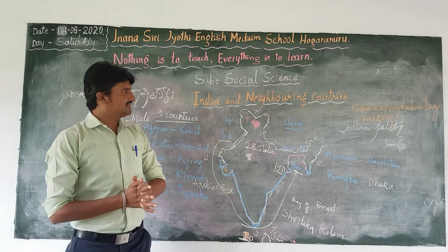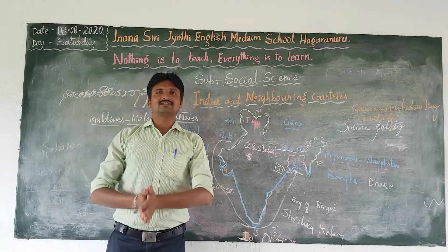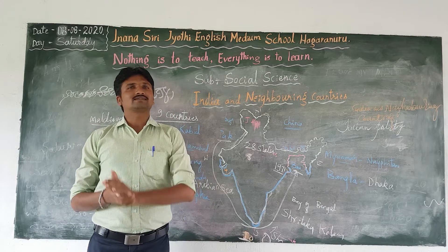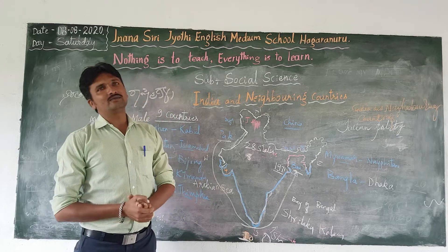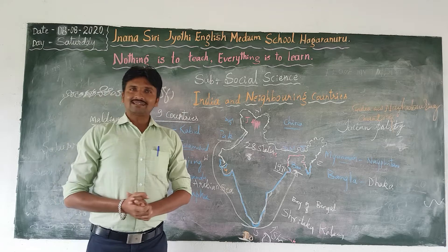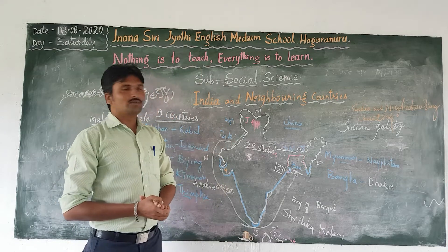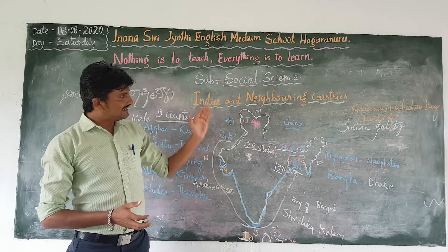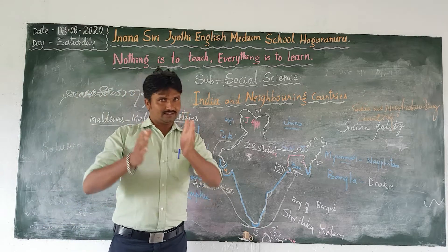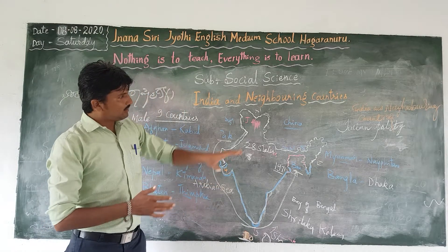I hope you know what is India. India is one of the 7th largest countries in the world, and the second most populous country in the world, which is in second place after China. Because China is the first place in population. So India is the second country which has the highest population.